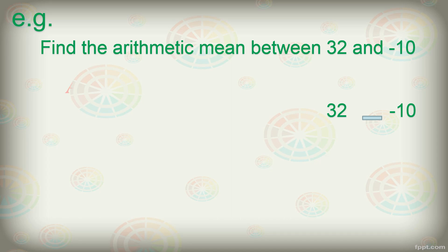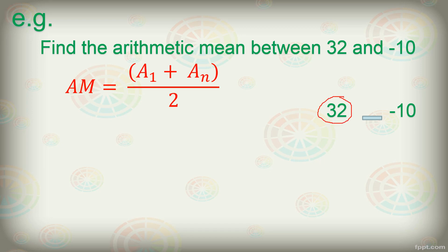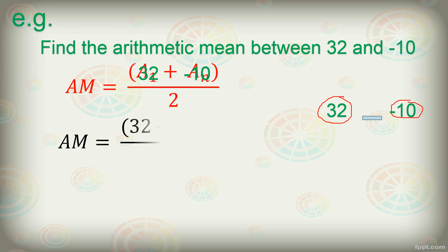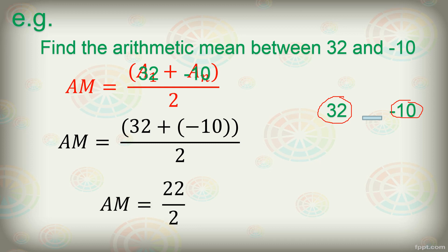Let us now use the formula for arithmetic mean: a sub 1 plus a sub n divided by 2. Our a sub 1 is the first term, which is 32. And a sub n, the last term, is negative 10. So the arithmetic mean equals 32 plus negative 10 divided by 2. Simplifying the numerator, 32 plus negative 10 gives us 22. Then 22 divided by 2, therefore our arithmetic mean is 11.